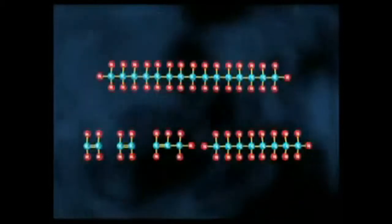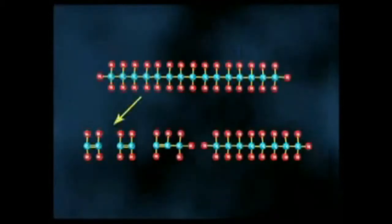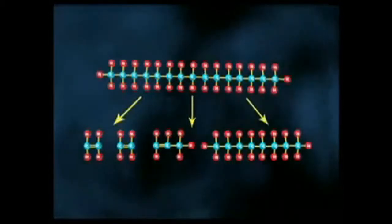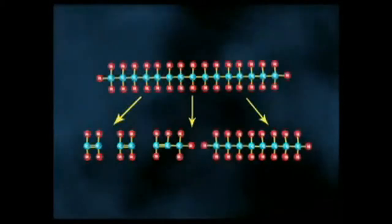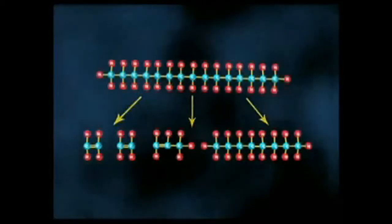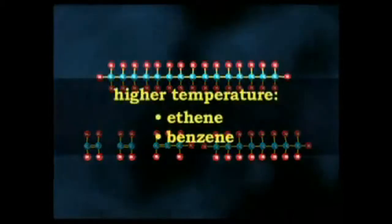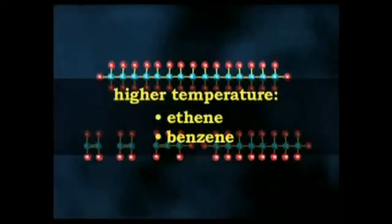Heavier hydrocarbons break down to some of these, but also give products rich in aromatic hydrocarbons, and hydrocarbons suitable for inclusion in petrol or diesel. Higher cracking temperature favours the production of ethene and benzene.